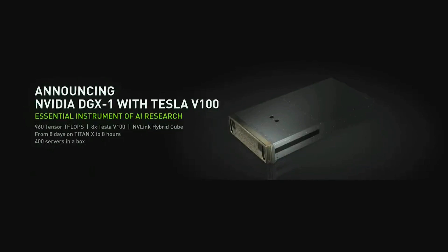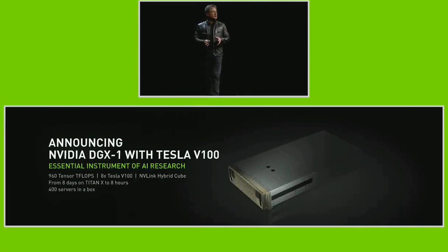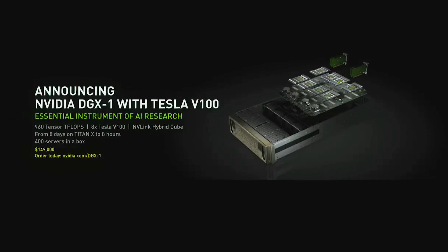For developers we created the DGX1 supercomputing appliance dedicated to AI with Volta. It has 960 tensor teraflops with 8 GPUs inside. It can now take what used to take 8 days to train — it now literally takes 8 hours. What took a week now takes a shift, and it replaces 400 servers. Volta will ship very soon — Q3 — and DGX systems will ship Q4 from OEMs all over the world.